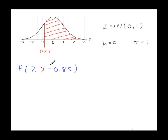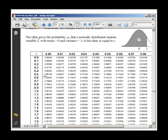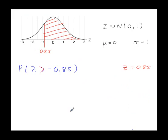Ignore the minus. Go to the table. Look up 0.85. 0.80234.